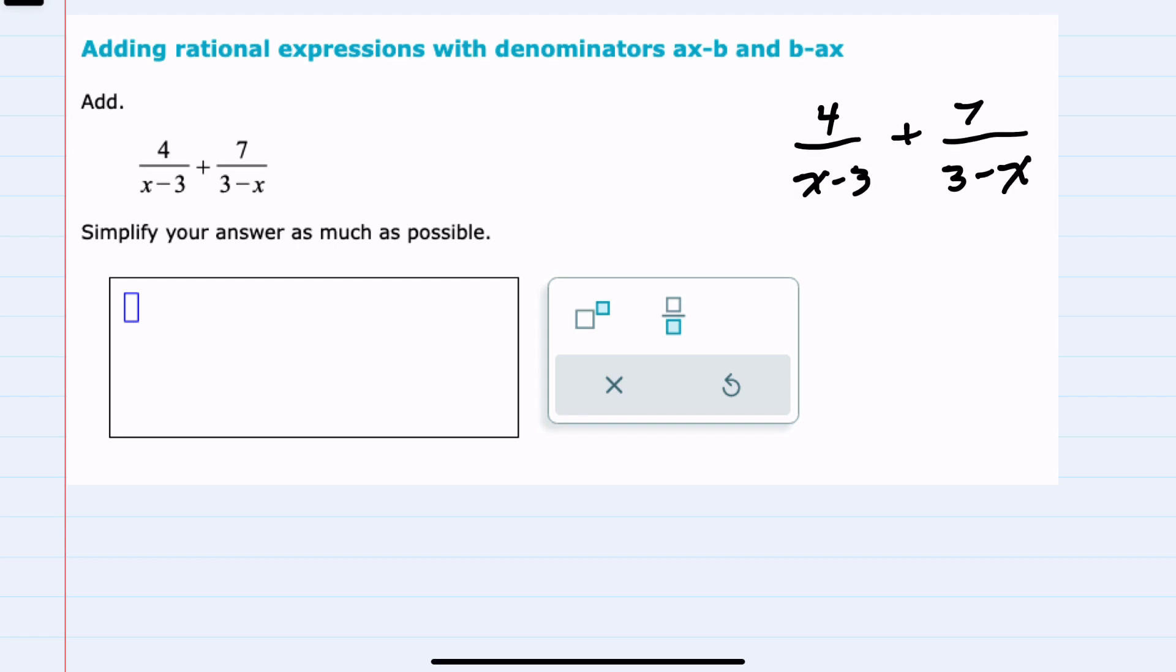In this example, we're doing addition, so we know we'll need a common denominator, and these denominators are almost the same. It's just that the order is different between the left that has x minus 3 and the right that has 3 minus x.